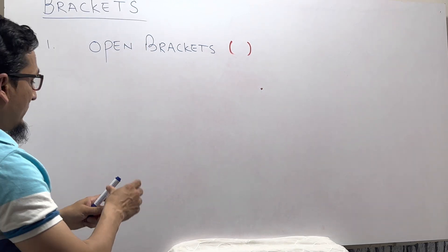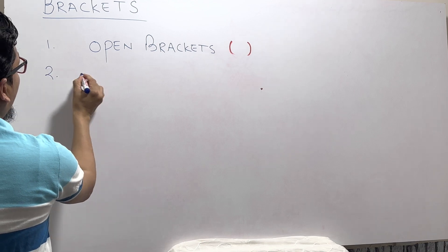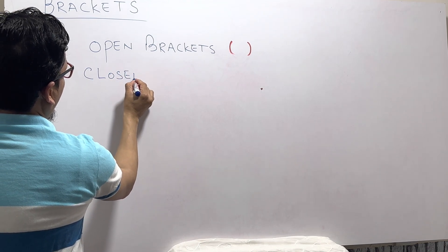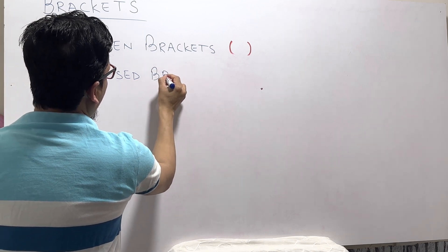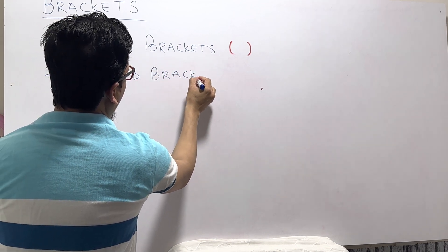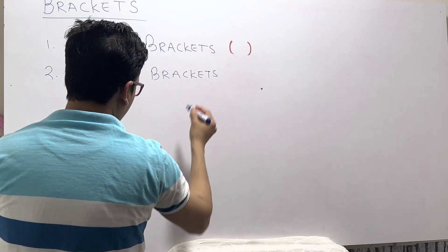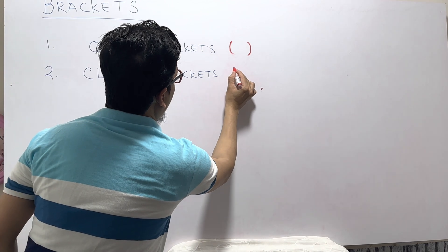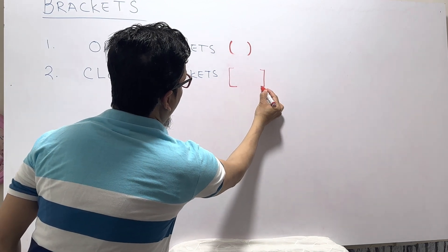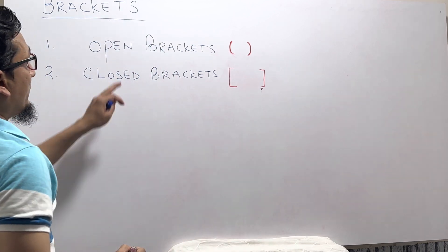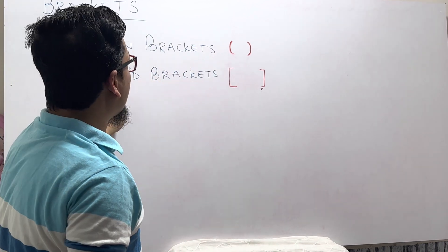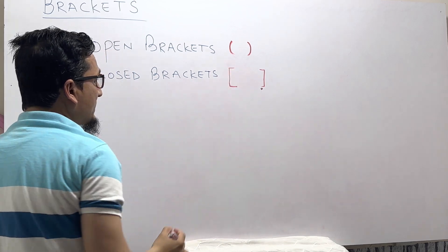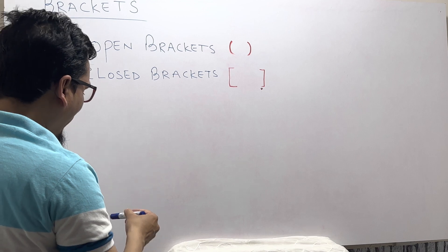Second, we have the closed bracket. The closed bracket is represented by this symbol. So this is the open bracket and this is the closed bracket.